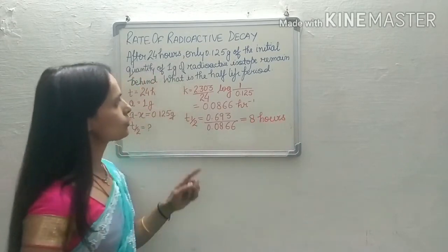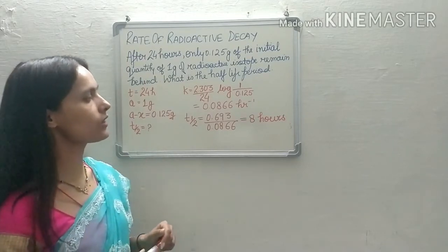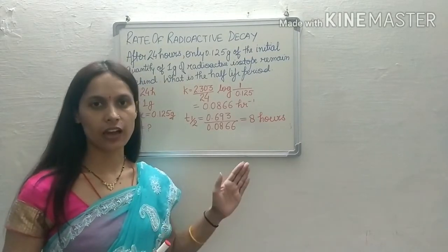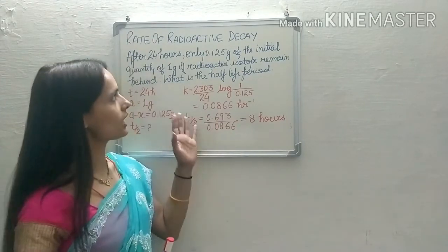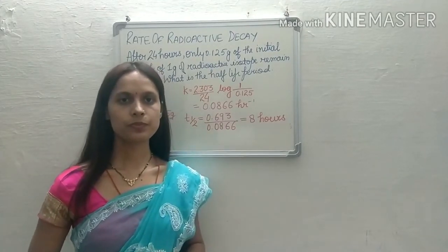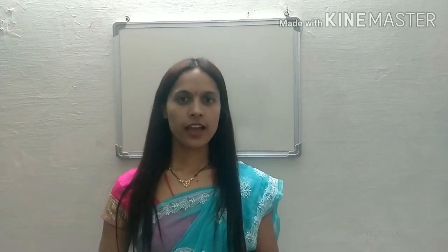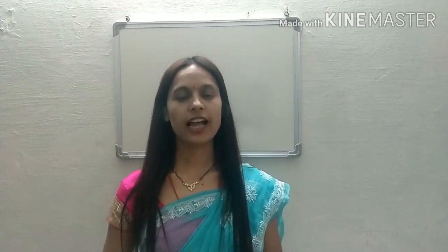The half life period comes out to be nearly 8 hours. So the half life period for the decomposition of this radioactive isotope is 8 hours. In this way, we can solve numericals related to radioactive decay. That's all for today — please subscribe to my channel, press the bell icon, and do the numericals based on pseudo first order reaction as well as radioactive decay. I'll see you in my next video. Bye-bye and thank you.